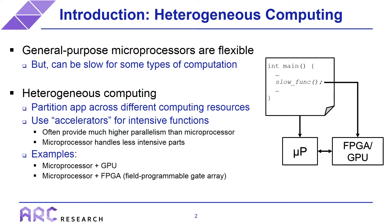This heterogeneous trend originated because general-purpose processors are designed to be very flexible — that is their main advantage. As a result, they can tend to be slow for certain types of computation, especially highly parallel computations. So that is where heterogeneous computing comes in. The idea here is instead of executing your entire application just on a microprocessor, you partition that application across different types of computing resources. Typically you identify computationally intensive functions of your application and map those onto different accelerator technologies, because those accelerators are able to exploit a lot more parallelism than what is available on the microprocessor.